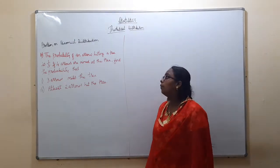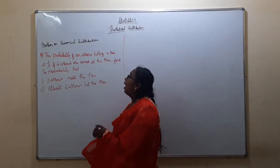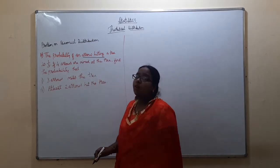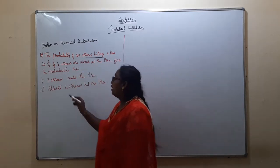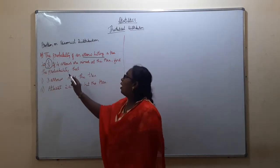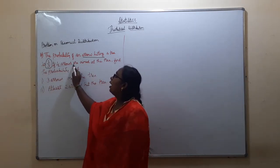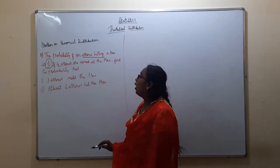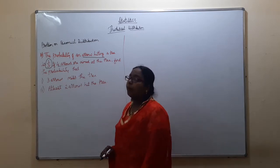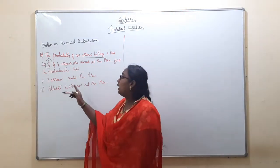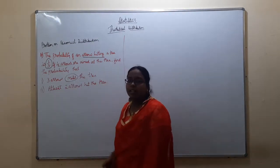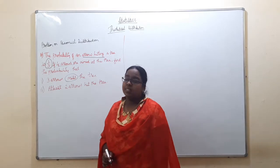10th problem: The probability of an arrow hitting a tree is 1 by 3. If 4 arrows are aimed at the tree, find the probability that 3 arrows miss — meaning 3 arrows are missing.